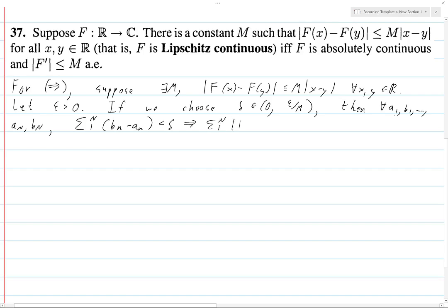Then the sum from 1 to n of |F(bn) - F(an)| is less than or equal to sum from 1 to n of M|bn - an|, which is less than M times epsilon over M, which turns out is epsilon.